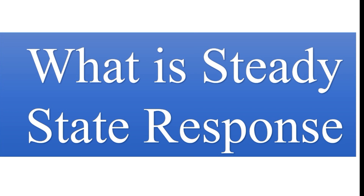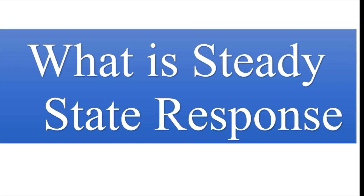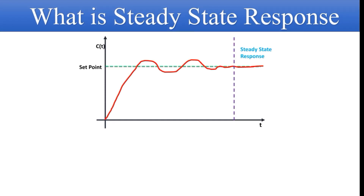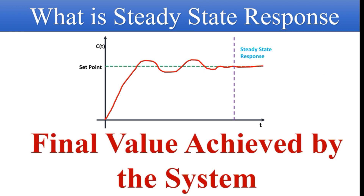The next question: what is steady state response? Using the same diagram, the steady state response is the final value achieved by the control system. Additionally, steady state response provides information about the error — the difference between the desired output and the actual output — and it gives the accuracy of the system, showing how accurately the control system is giving its response.